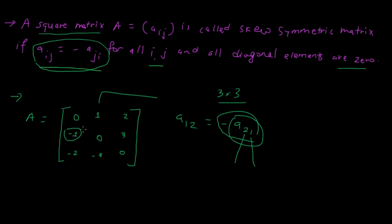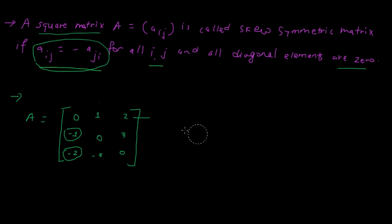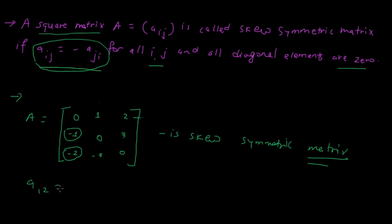Similarly, consider a_13. Its corresponding element is a_31 — and the minus sign indicates that a_ij equals minus a_ji. To confirm: a_12 equals 1 and a_21 equals minus 1; a_13 equals minus a_31, where a_31 equals 2. This verifies the skew symmetric condition.